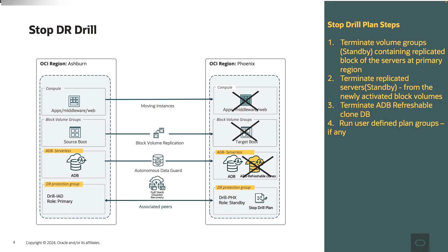For a stop drill plan, we basically do the reverse. All the volume groups which were created as part of the start drill plan will be terminated. We shut down the VM and terminate the virtual machine which was created. We also terminate the refreshable clone database for the autonomous database. Any user-defined plan groups you have can also be run as part of the overall plan. So let's see this in a demo.